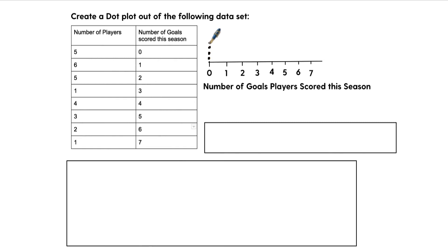For here, for the number of goals players scored in a season, we need to put five dots here. So one, two, three, four, five. For one, we will put six dots. One, two, three, four, five, six. Oh shoot, I wanted that to look like it was one more, but hopefully you get that.